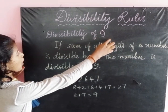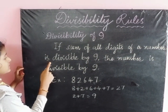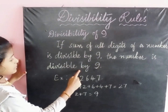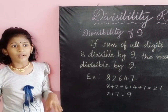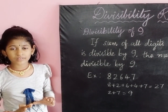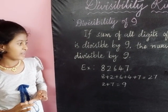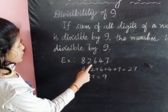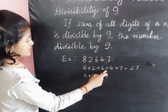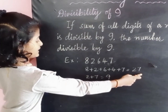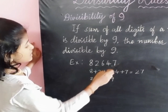Let us now see divisibility of 9. If the sum of all digits of a number is divisible by 9, the number is divisible by 9. For example, 82647 — adding all digits: 8 plus 2 plus 6 plus 4 plus 7 gives us 27. As 2 plus 7 equals 9, which is divisible by 9, therefore 82647 is divisible by 9.